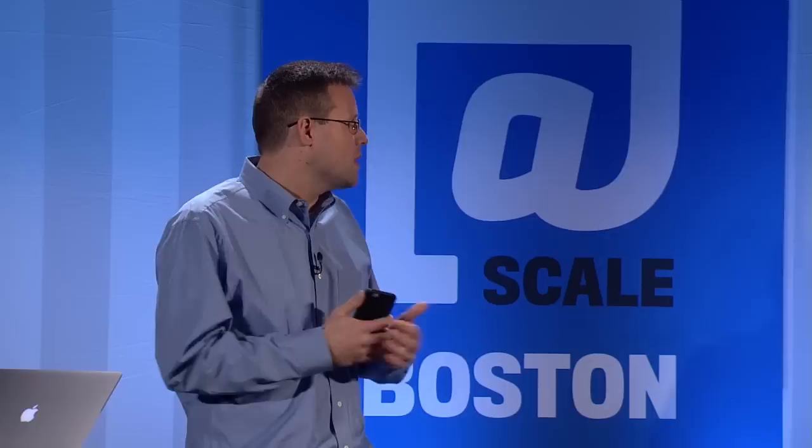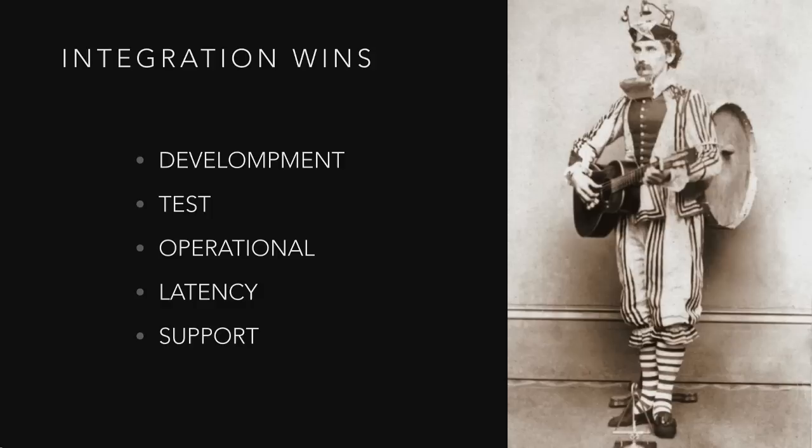My pitch is: use fewer systems. Development is a lot easier — I can install one instance of VoltDB on my laptop and run all my development work there. Testing is obviously easier. When I have a problem, I know which system is failing — it's my system. Operationally, I'm running three nodes, not 17. The latency in VoltDB blows away the latency in all of these systems — compared to Spark Streaming, it's many orders of magnitude. And for support, if something goes wrong, I call VoltDB support and that's the problem. I don't have to figure out: is it Cassandra? Is it Storm? Is it Zookeeper? Is it Kafka?